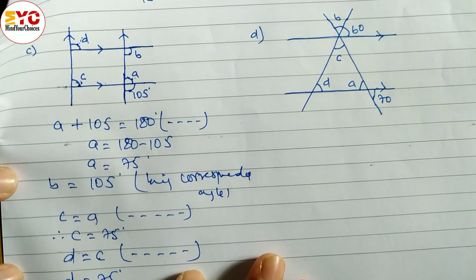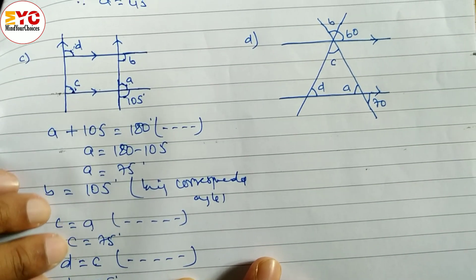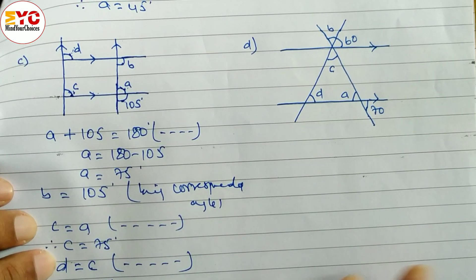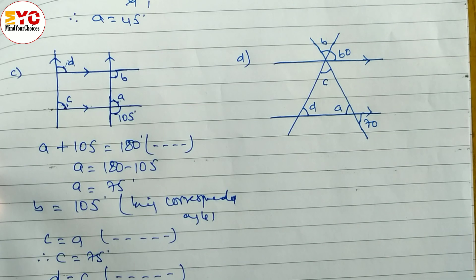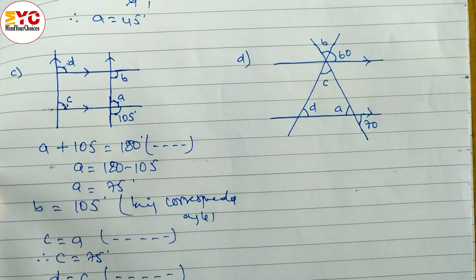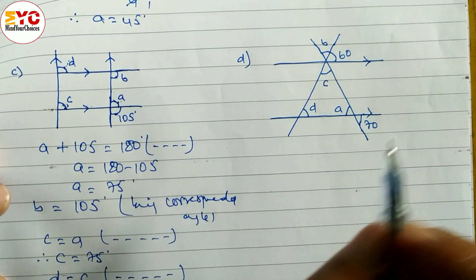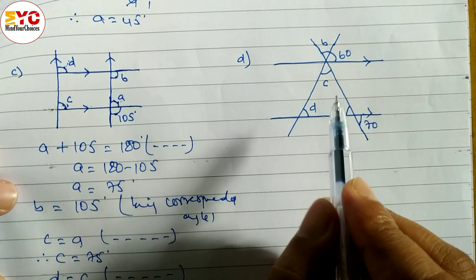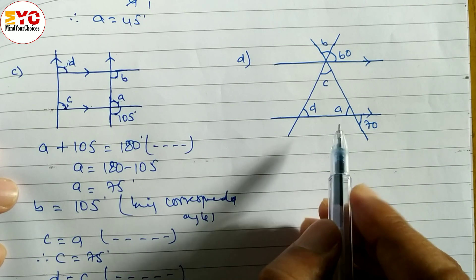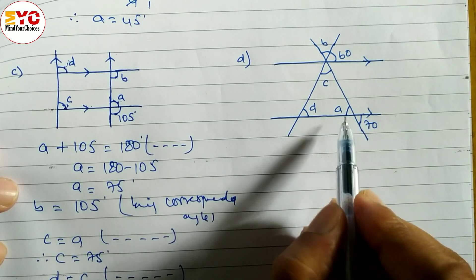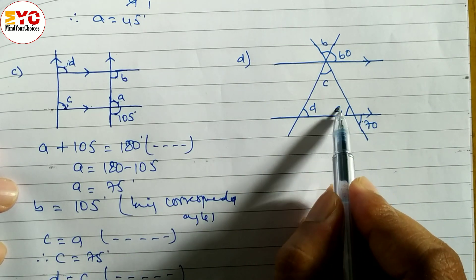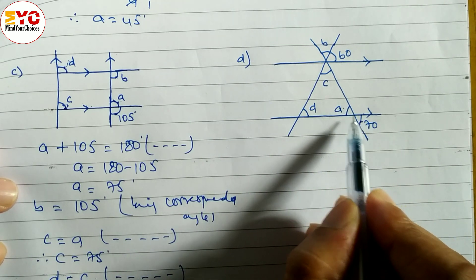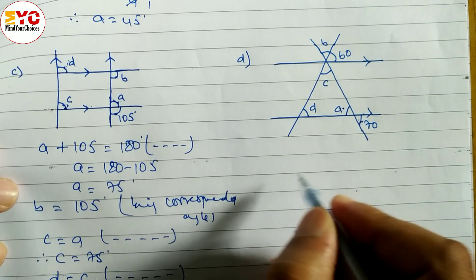Hope you understand question number c. Now look at question number d. First of all, try to understand the diagram. Find out the value of a. a is equal to 70. What is the relation of these two? Vertically opposite angle.